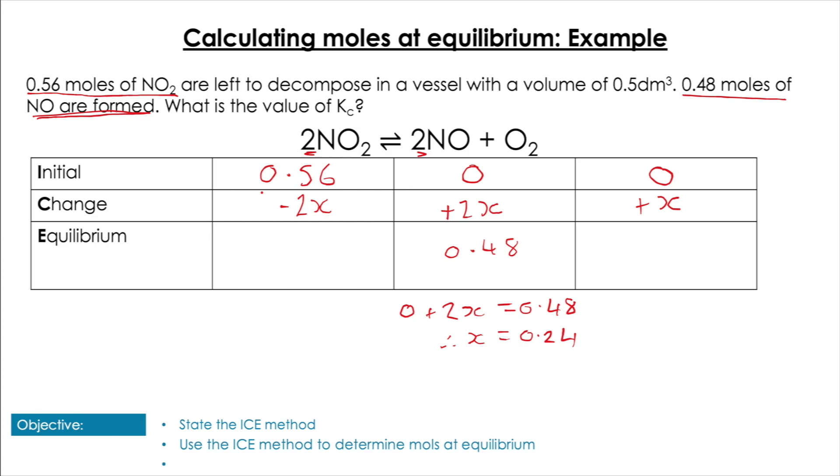Now we use this value for X to solve the other equations. For NO₂, we have 0.56 - 2X at equilibrium, which is 0.56 - 0.48 = 0.08 moles. For oxygen, 0 + X = 0.24 moles at equilibrium.